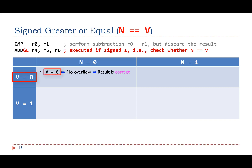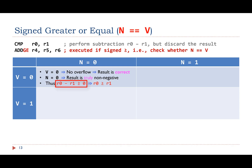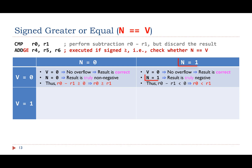When V is 0, it means no overflow has taken place in the signed subtraction. If there is no overflow, the result of the signed subtract will be correct. Since N is 0, we know the subtraction result is non-negative. Based on these two observations, R0 minus R1 is greater than or equal to 0, so R0 is signed greater than or equal to R1. Similarly, if N is 1, the subtraction result is truly negative, so R0 is signed less than R1.